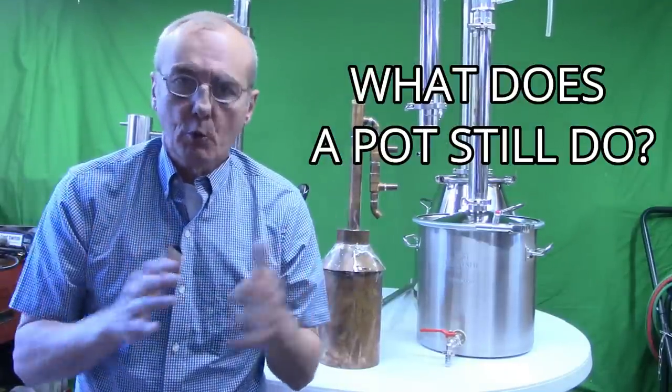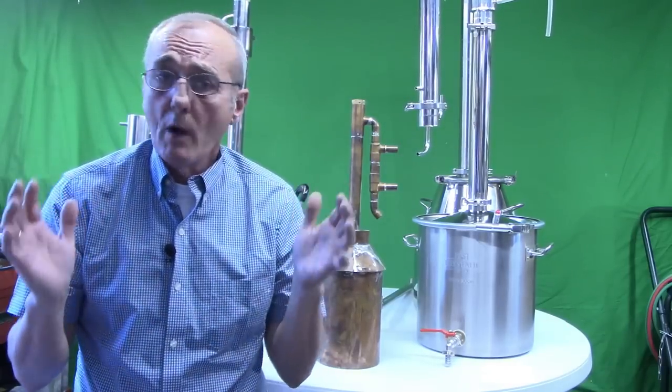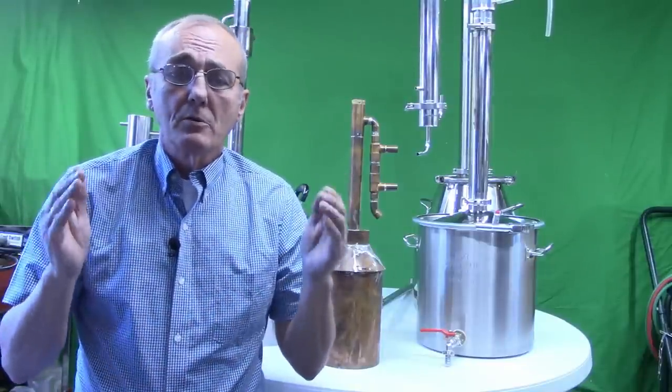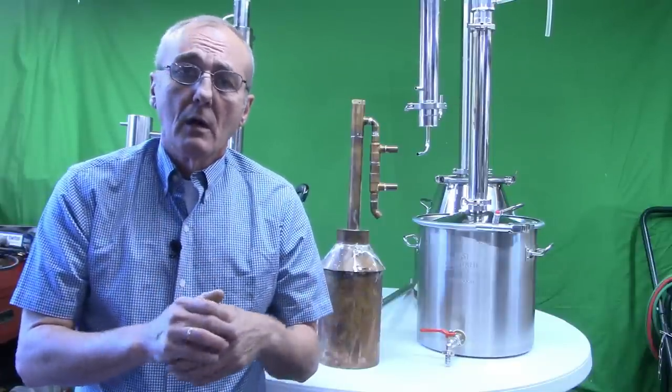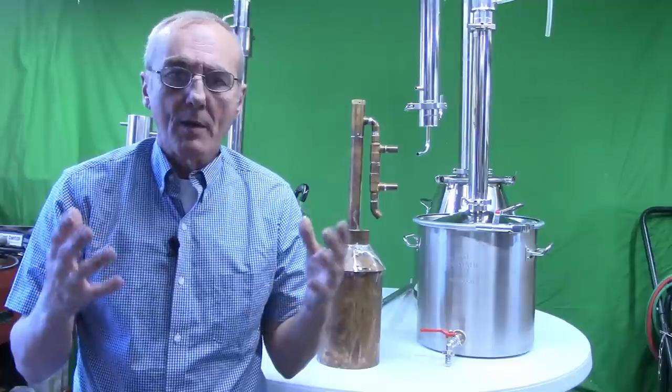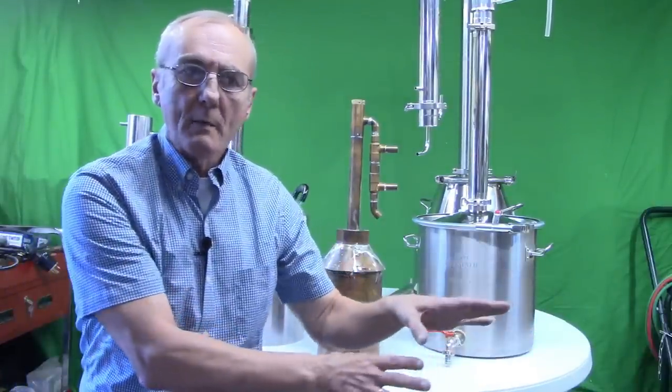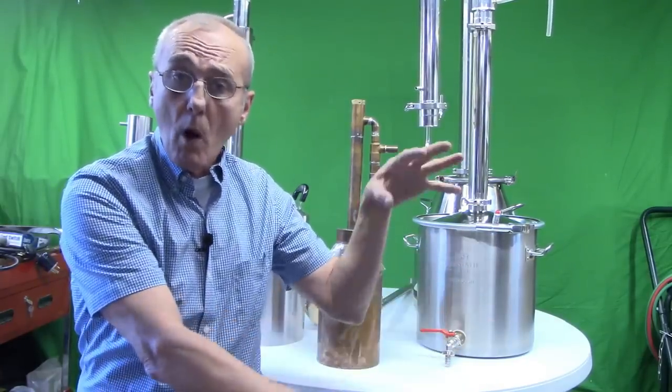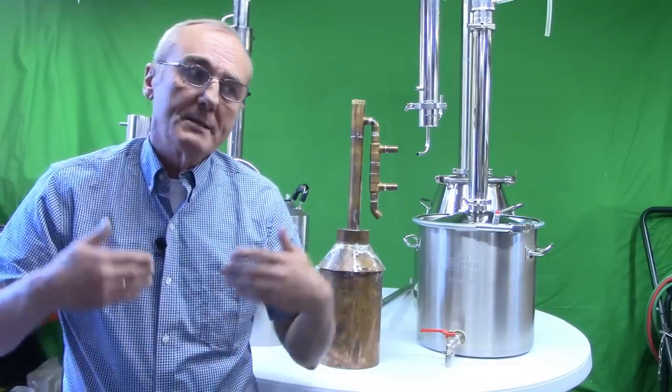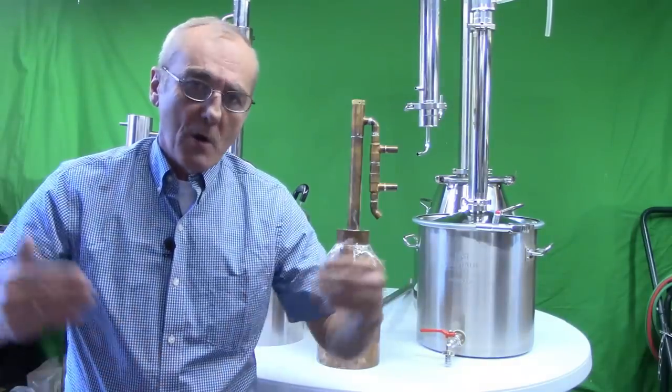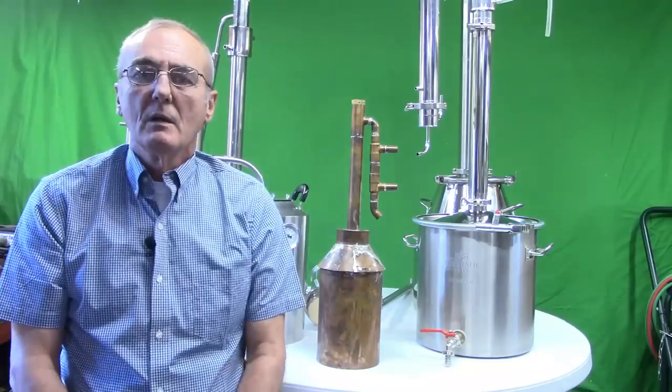What does a pot still do? A pot still allows you to do one thing and one thing only. It allows you to separate ethanol from water in an environment that you control. That's what it does. It's nothing more than a means to get to the end, to separate your wash, mash, whatever you've fermented. You want to separate that alcohol by volume from the water.